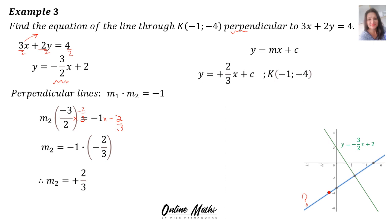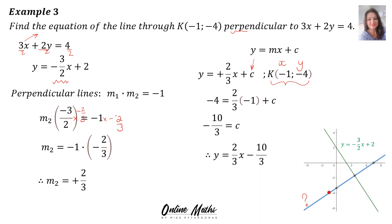Into y = mx + c we substitute the perpendicular gradient 2 over 3. To find c we need a coordinate on the line — the only one we have is point K(−1, −4). Substituting x = −1 and y = −4 gives c = negative 10 over 3. Therefore the equation for the blue line, perpendicular to the given one, is y = 2 over 3 x minus 10 over 3.